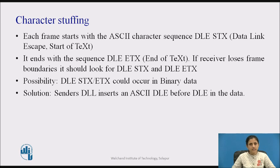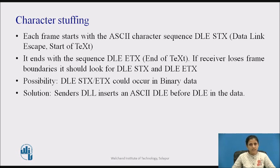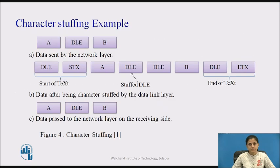However, if binary data is being transmitted, there exists a possibility of the characters DLE STX and DLE ETX occurring in the data, which can interfere with the framing. The sender's data link layer inserts an ASCII DLE character just before any DLE character in the data, and the receiver's data link layer removes this extra DLE before the data is given to the network layer. However, character stuffing is closely associated with 8-bit characters, which is a major hurdle in transmitting arbitrary-sized characters. Figure 4 gives an example data stream before stuffing, after stuffing, and after destuffing.